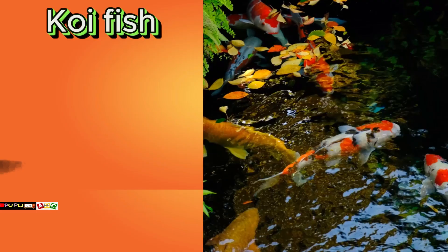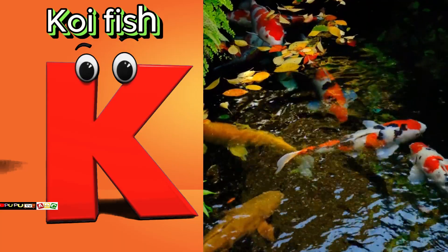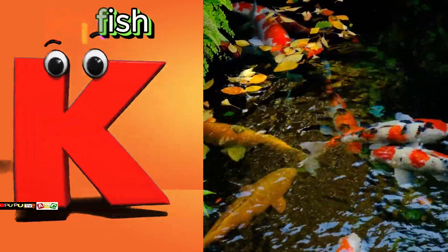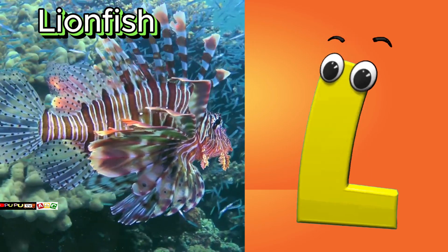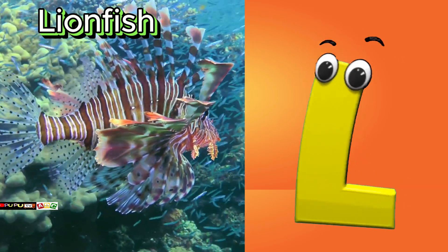K is for koi fish. Cuh, cuh, koi fish. L is for lionfish. Luh, luh, lionfish.